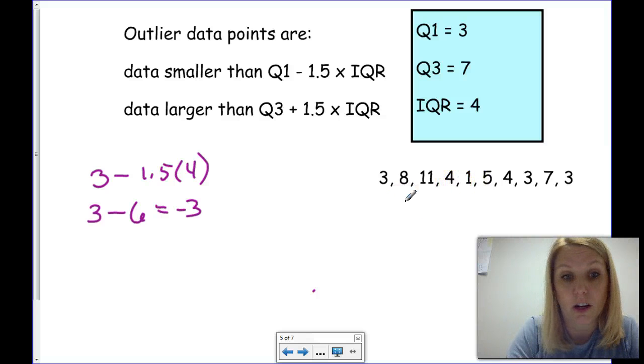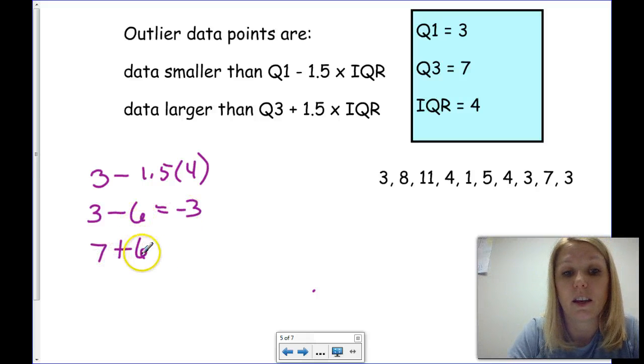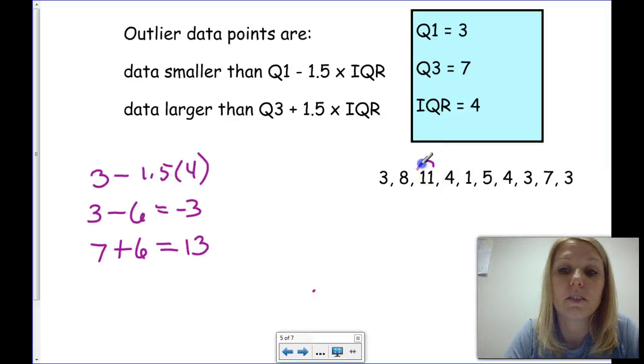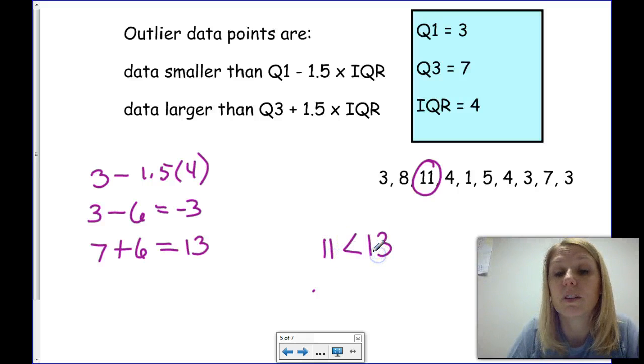Let's look at the upper quartile. We have 7 plus 6, in this case, because 1.5 times 4 is 6 again. So, now we're adding that to our third quartile, and in this case, we have 13. Notice that I had originally said that this is a large number, and it could be an outlier. But, 11 is smaller than 13. So, in this case, it's not an outlier.